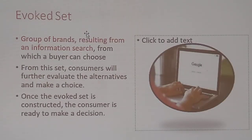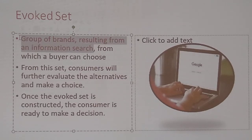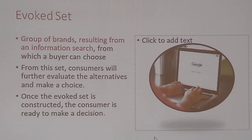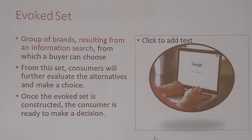The evoked set is the group of brands resulting from an information search. When you do a search for a particular subject, you'll get a group of results. From this set, consumers will further evaluate the alternatives and make a choice. Once the evoked set is constructed, the consumer is ready to make a decision. For example, I'm looking for a particular pair of shoes — I'll do a search, find the kind I like, see what the prices are, and make a decision from there.